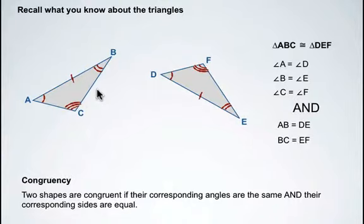Side BC would have to have the same measure as side length EF. And finally side AC would have to have the exact same measurement as side DF.